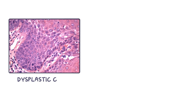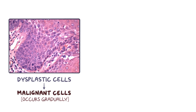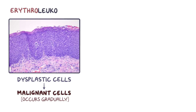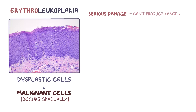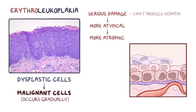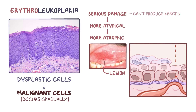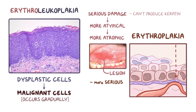Generally speaking, the transition from dysplastic cells to malignant cells happens gradually. As cells become more and more dysplastic, the lesions sometimes develop red spots, and at that point it's called erythroleukoplakia. Cells in these red areas have suffered serious damage to their DNA and don't mature normally and therefore can't produce keratin. As they become more and more atypical, the epithelium becomes more immature, starting to become thinner or atrophic, allowing more of the underlying blood vessels to be seen through the mucosa. At that point the lesion will be completely red, and will be called erythroplakia. Erythroplakias are more serious than leukoplakia, because almost always when they're removed and examined under the microscope, they'll show severe dysplasia or early cancer.